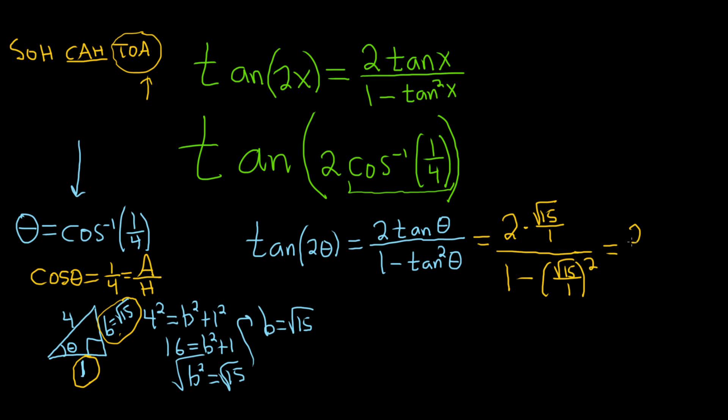So this is equal to 2 times the square root of 15. Then on the bottom we get 1 minus, when you square the square root of 15, you just get 15.